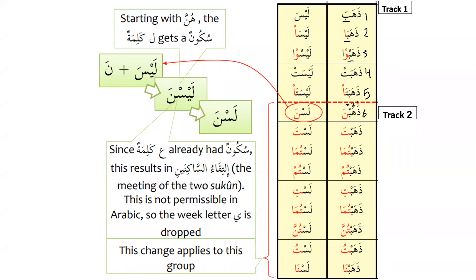Up to form number five, the letters are mutaharrik (voweled), but at form six the third letter becomes saakin — so track two of the train starts. It becomes ذَهَبْنَ, not ذَهَبَنَ — the first letter is mutaharrik, second is mutaharrik, but the third has become saakin. If you memorize the conjugation of one verb like ذَهَبَ, you can derive the conjugation of all Arabic verbs. Track two continues: ذَهَبْتَ، ذَهَبْتُمَا، ذَهَبْتُمْ، ذَهَبْتِ، ذَهَبْتُمَا، ذَهَبْتُنَّ، ذَهَبْتُ، ذَهَبْنَا.